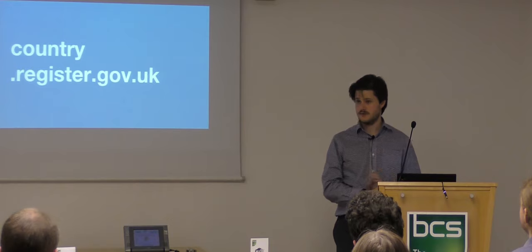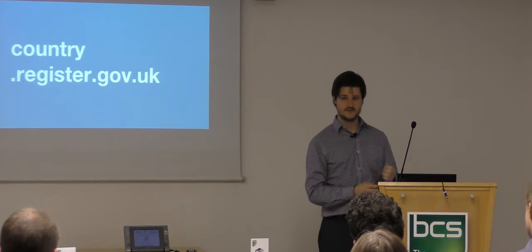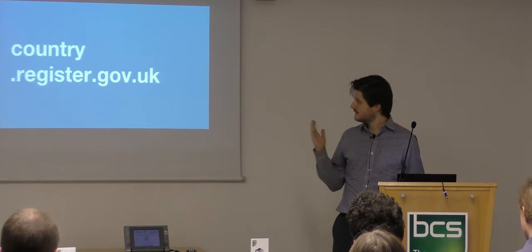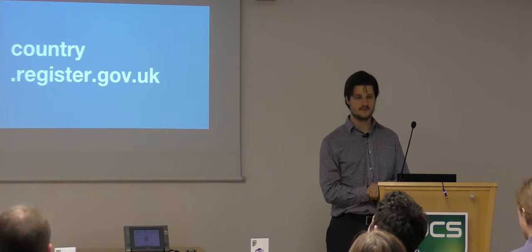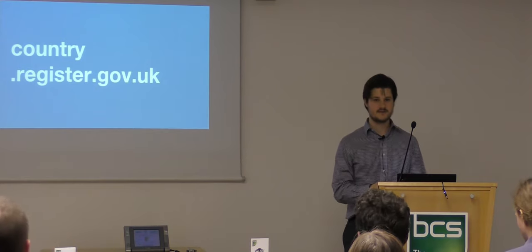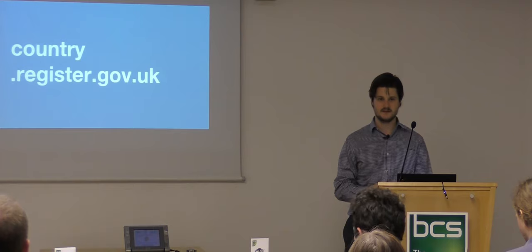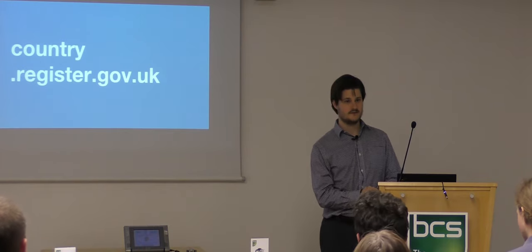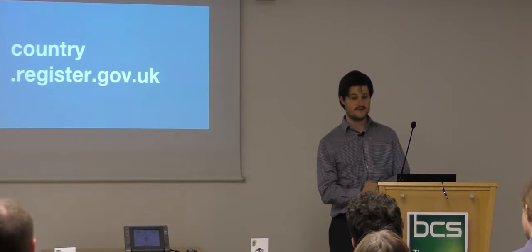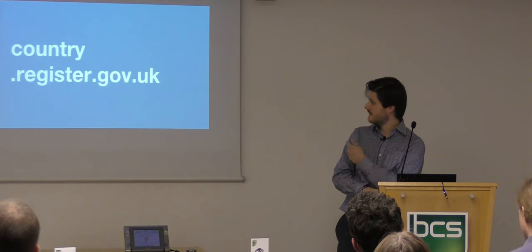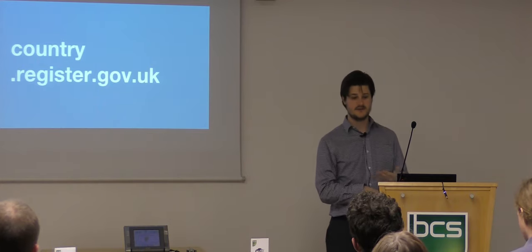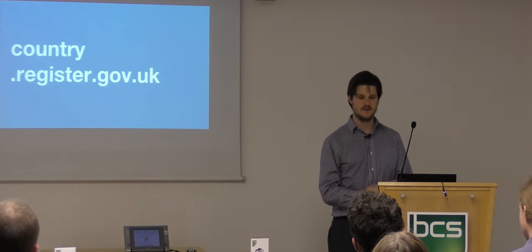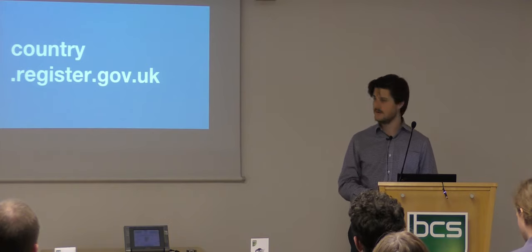Those are the nine principles that we base registers on when we make them. The first one that we did — we published this one in February 2016 — it's the country register, the list of countries that the UK officially recognises. If you go there in your web browser, you'll see an HTML front end you can click around. There's also an API which reflects it.